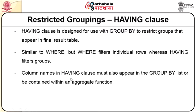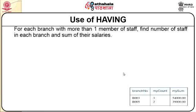Column names in the HAVING clause must also appear in the GROUP BY list or be contained within an aggregate function. As an example of the HAVING clause: for each branch with more than one member of staff, find the number of staff in each branch and the sum of their salary. Concerning the previous query, anything which has got more than one staff member — so it should be with 2 or more — we want to find the number of staff in each branch and their salary.